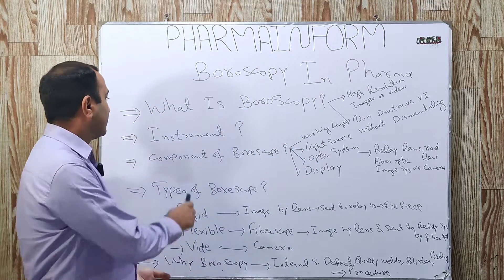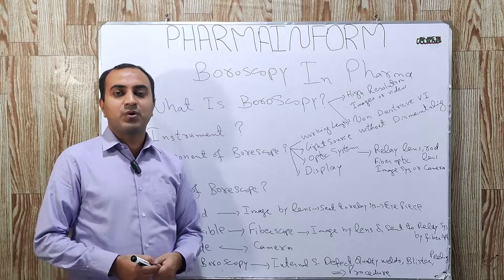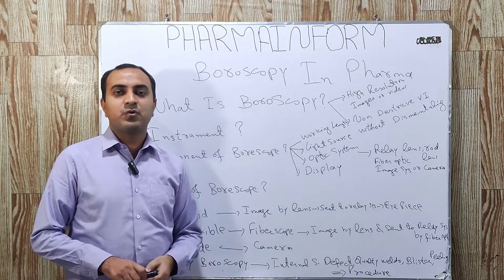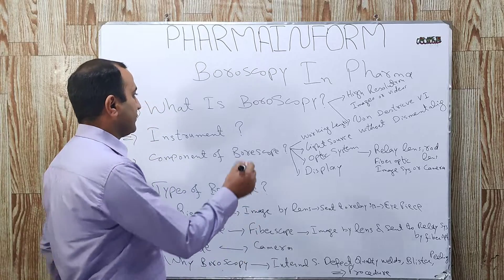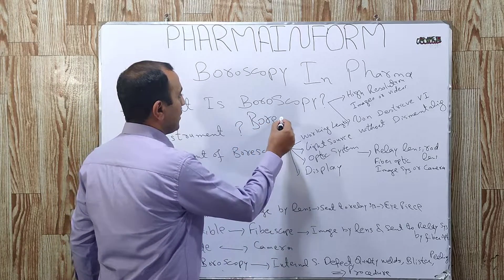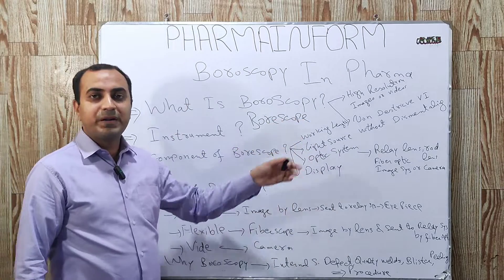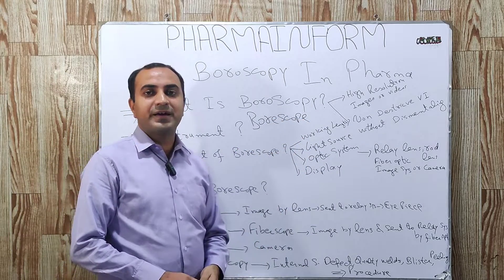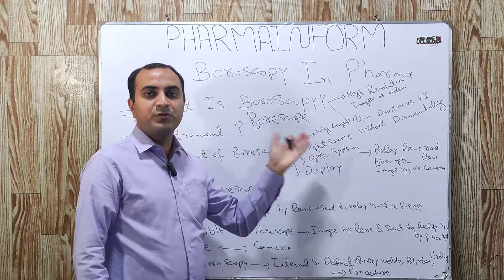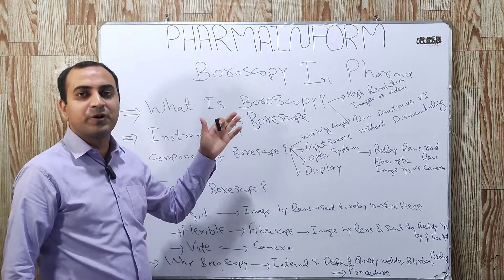Which instrument is used for boroscopy? The name of the instrument used for boroscopy is borescope — B-O-R-E-S-C-O-P-E. Many people write it as 'boroscop' but the correct spelling is 'borescope'.